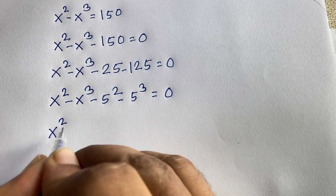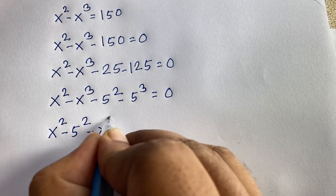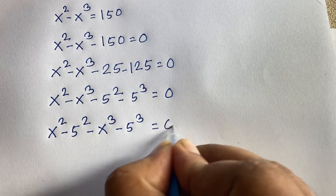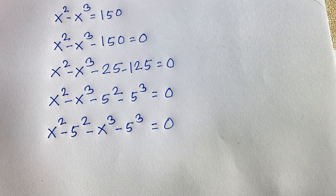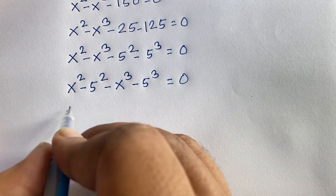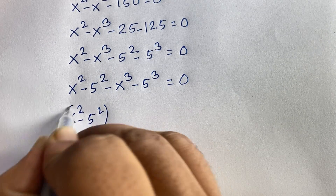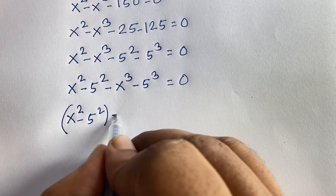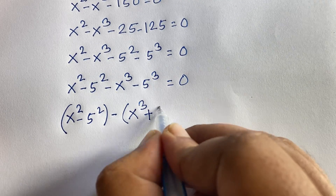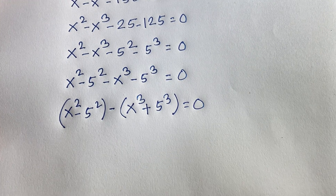I can now regroup this as: (x squared minus 5 squared) minus (x cubed minus minus, which becomes plus, 5 cubed) is equal to 0. So it becomes (x squared minus 5 squared) minus (x cubed plus 5 cubed) is equal to 0.